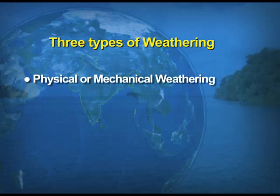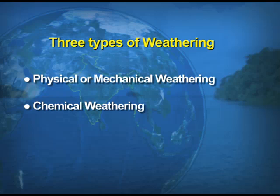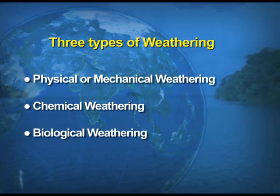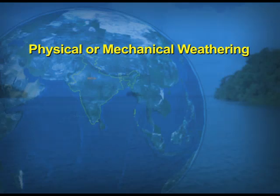Now we take up the three types of weathering. One is physical weathering, which is also known as mechanical weathering. Second is chemical weathering and the third is biological weathering. Physical or mechanical weathering is the disintegration of the rocks by the mechanical process, and that is how this is known as physical or mechanical weathering.